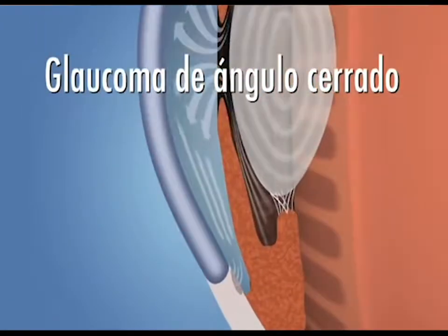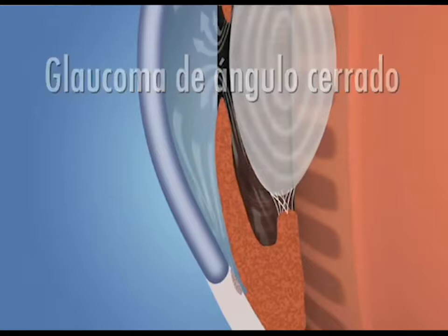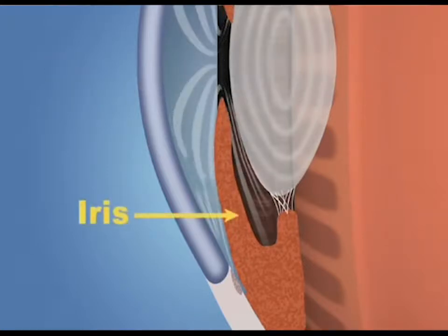El glaucoma se clasifica de varias formas. En el momento de la aparición, se diagnostica el glaucoma congénito, el glaucoma infanto-juvenil y el glaucoma del adulto o glaucoma crónico simple. Si tenemos en cuenta el mecanismo de producción, podemos clasificarlo en glaucomas de ángulos abiertos y glaucomas de ángulos cerrados. Y según el estadio se clasifica en incipiente, en desarrollo, y glaucoma avanzado o absoluto, en aquel que ya el paciente no tiene visión.